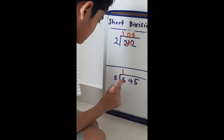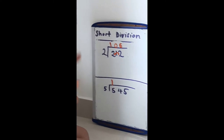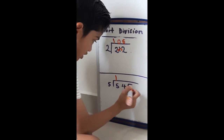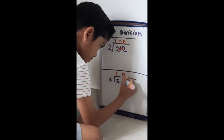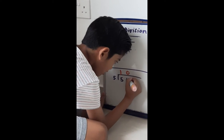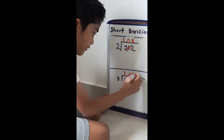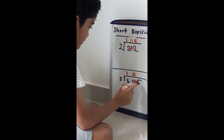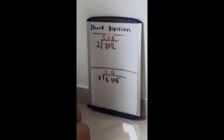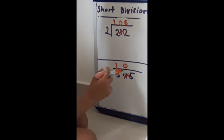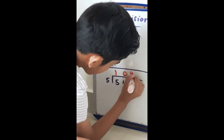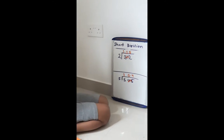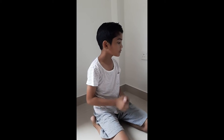Then 4 divided by 5 — you can't do that, so we do the same thing as the first question. Put a 0 here and carry the 4 next to the 5, so 45 divided by 5 is 9. Put 9 here and there are no remainders.